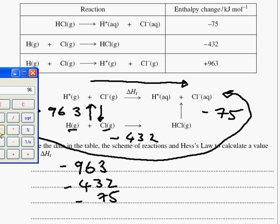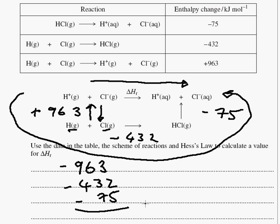I've got 963, 432, and 75. The combined total is 1470. It's minus 1470. So if I add all these together, I get minus 1470 kilojoules per mole. Believe it or not, that is the answer.